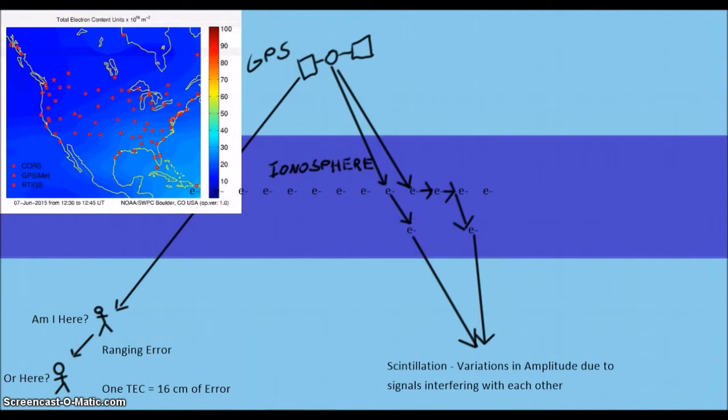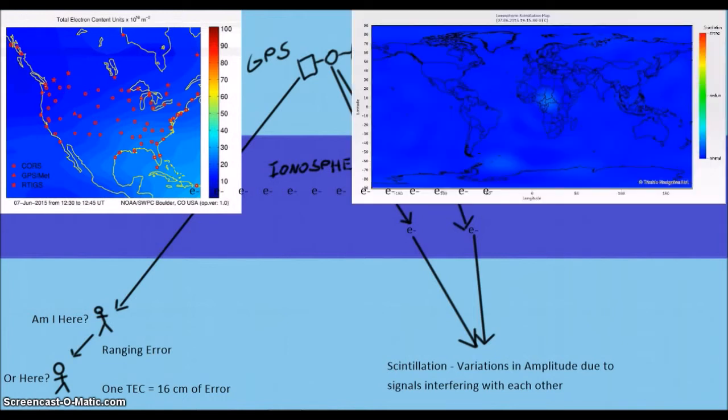Scintillation is generally described using the S4 index, which is a 0 to 1 scale, with anything above 0.6 being strong, and anything under 0.3 unlikely to affect your signal. You can find predictions for these values online, and even plan operations knowing what ionospheric interference to expect.